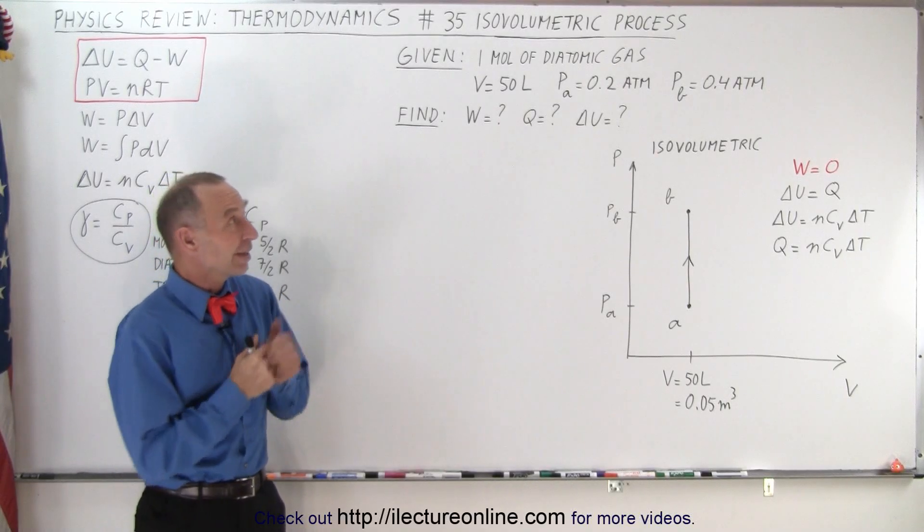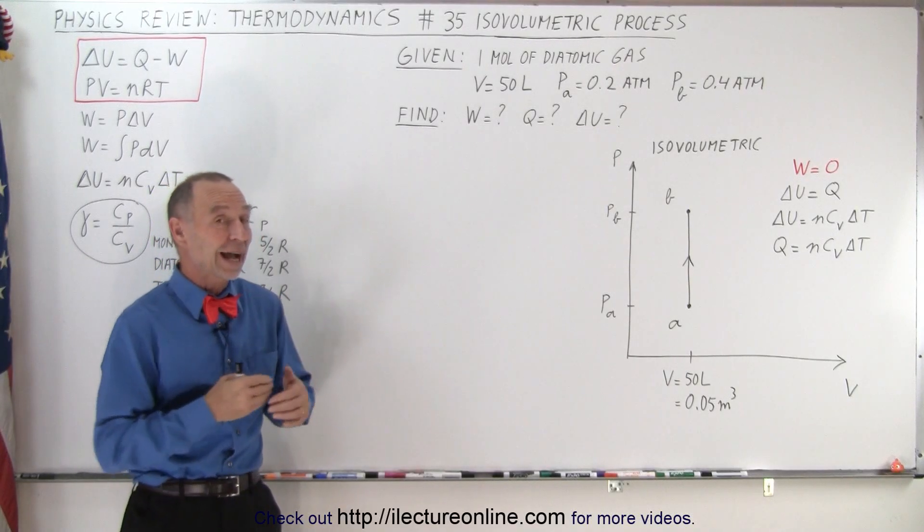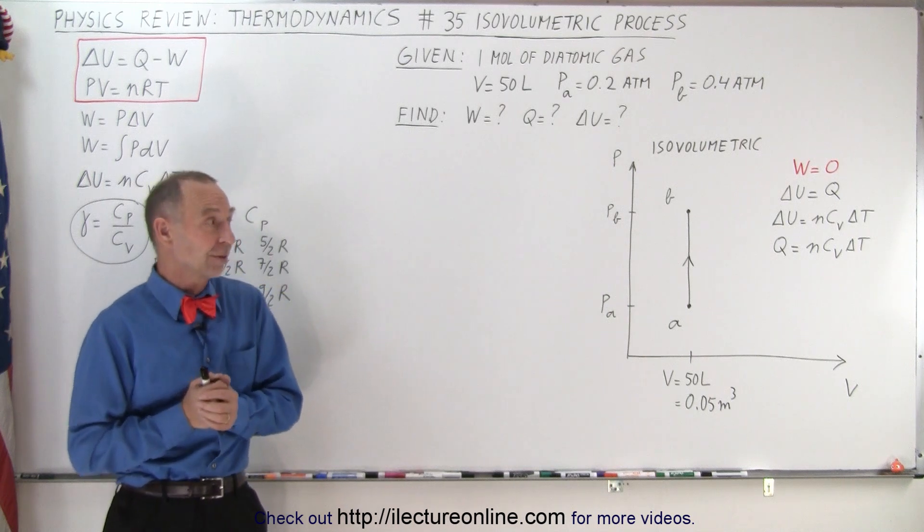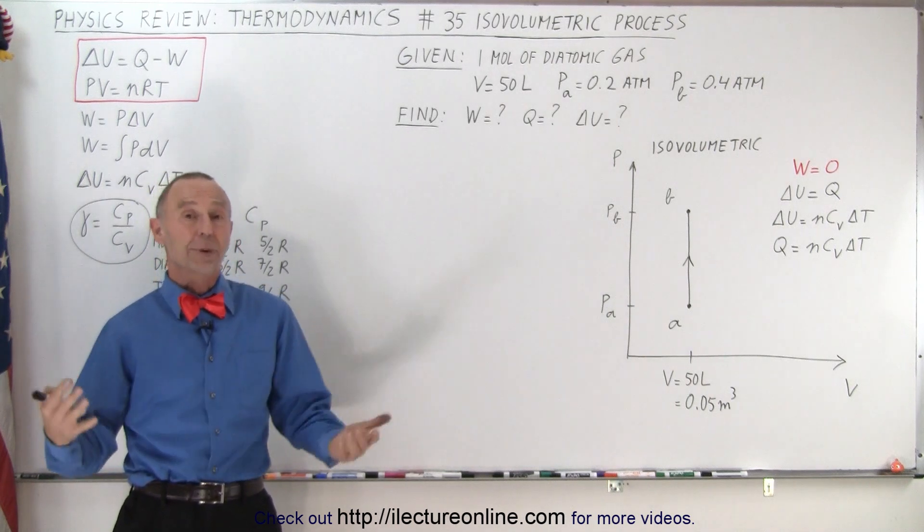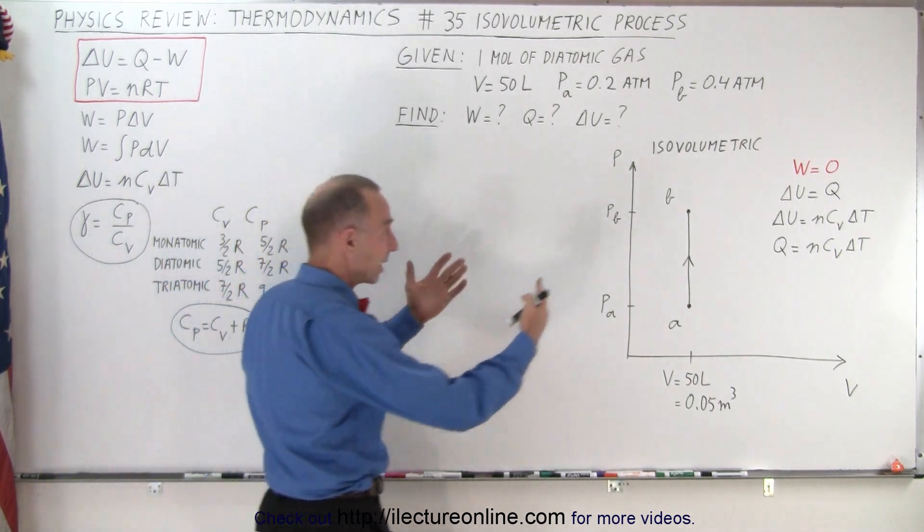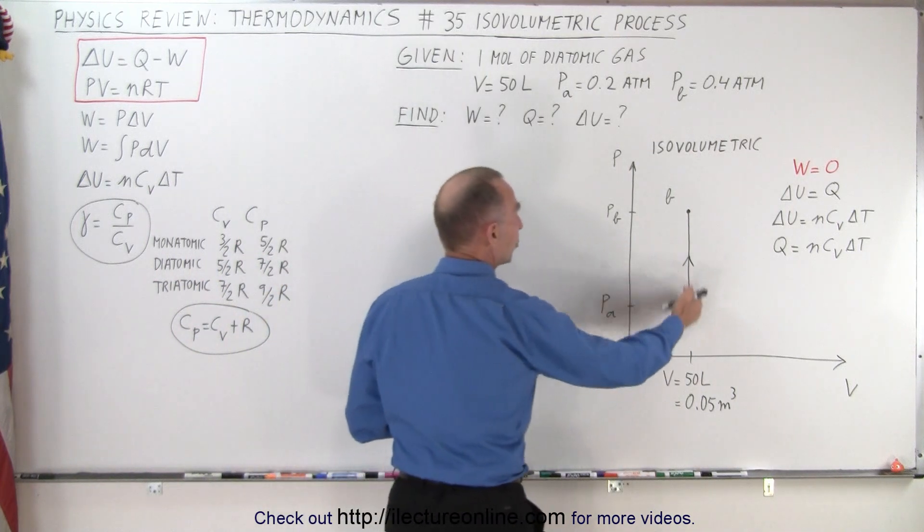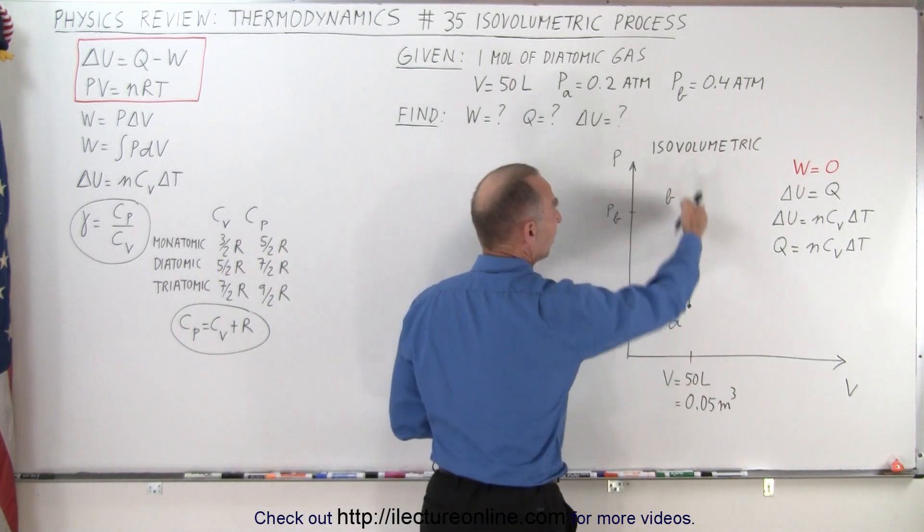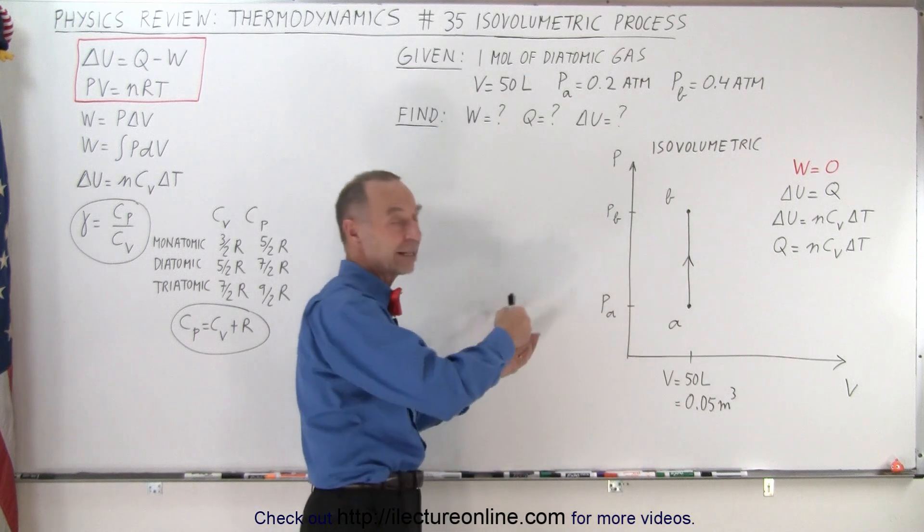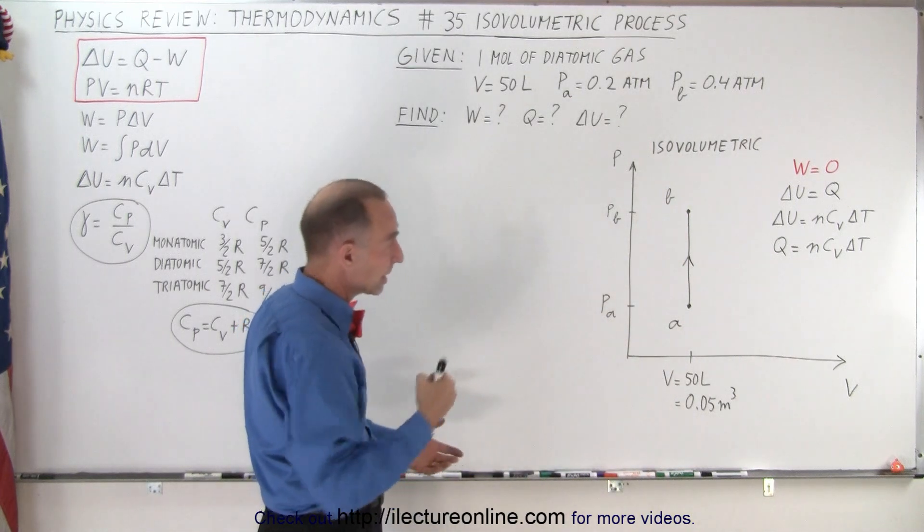Welcome to ElectroOnline. This example is for the isovolumetric process, and regardless what the problem asks you should be able to draw a diagram going from A to B. It could be up or down. If it's up of course then you have to add heat. If it goes down you take heat away.